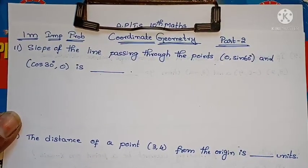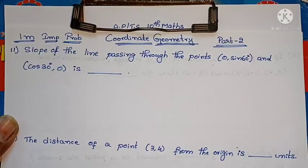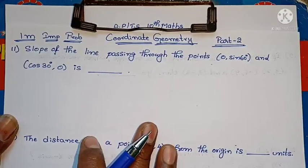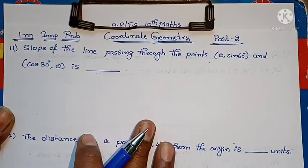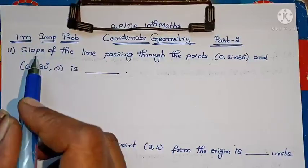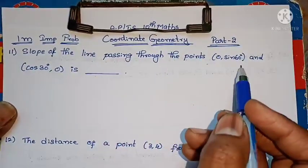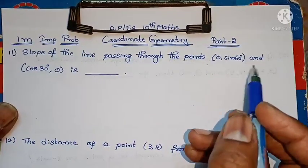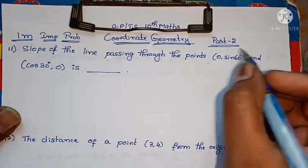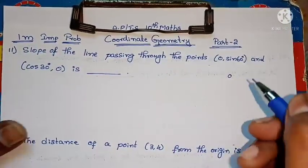Welcome to Parnika Max. Last video lo coordinate geometry sambandhinchina one mark important problems chushankada. This is the continuation, the second video. In this video we'll discuss continuation of one mark important problems. This is the 11th question, we already did 10 questions. Question chudandi: slope of the line passing through the points (0, sin 60 degrees) and (cos 30 degrees, 0).